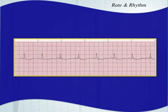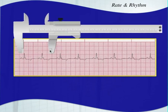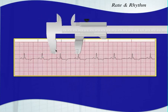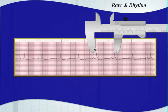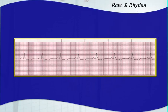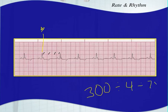This next one is kind of faded and difficult to see, but measuring shows it's pretty regular. Using the 300 rule — this one's on a bold line — we have one, two, almost three, almost four boxes to the next QRS complex. 300 divided by 4 is 75, so this rate is actually between 75 and 100 beats per minute, since there are almost four, but not quite three, large boxes between the R-waves.